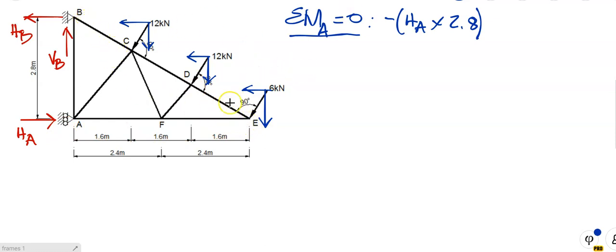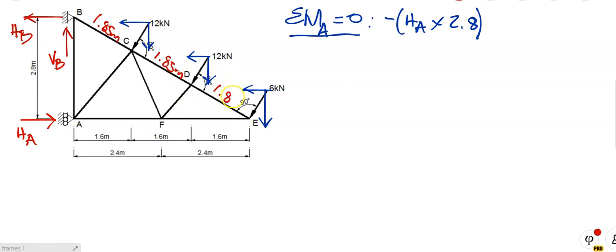You do the maths and work out the lengths BC, CD, and DE. Notice that the distance from one point to the next is 1.6, then 2 times 1.6, then 3 times 1.6. Taking the geometry, BC equals CD equals DE. If you do the maths, BC is 1.85 metres, CD is also 1.85 metres, and DE is also 1.85 metres. Don't believe me? Stop the video, go back, and work it out to see if you get the same answer — I could have made a mistake.